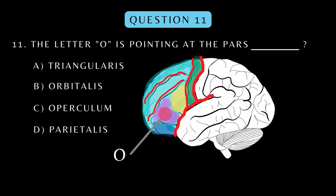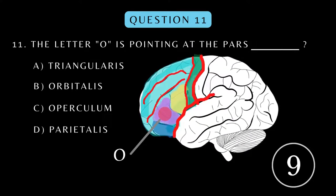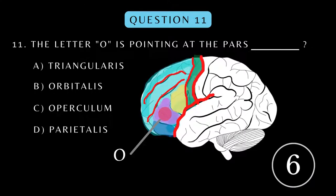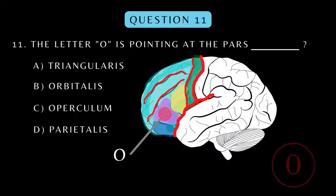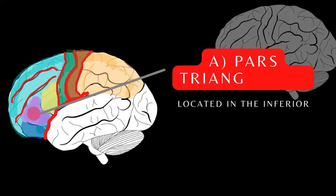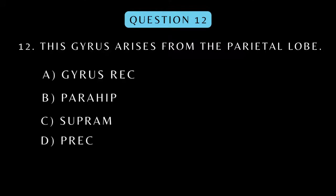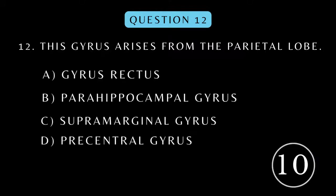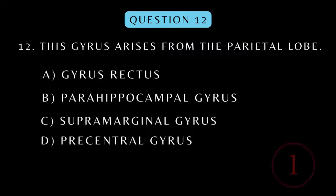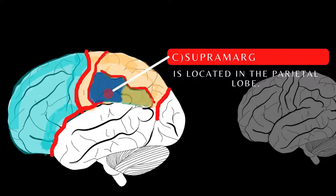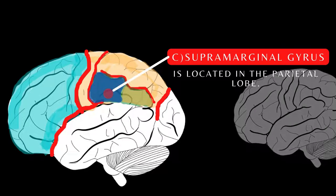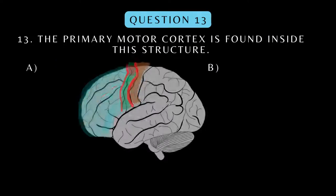The letter O is pointing at the pars blank. This gyrus arises from the parietal lobe. The primary motor cortex is found inside this structure.